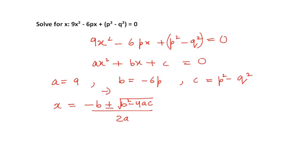So we'll get -(-6p) ± under root [(-6p)² - 4ac], which is 4 × 9, then you have c which is p² - q².